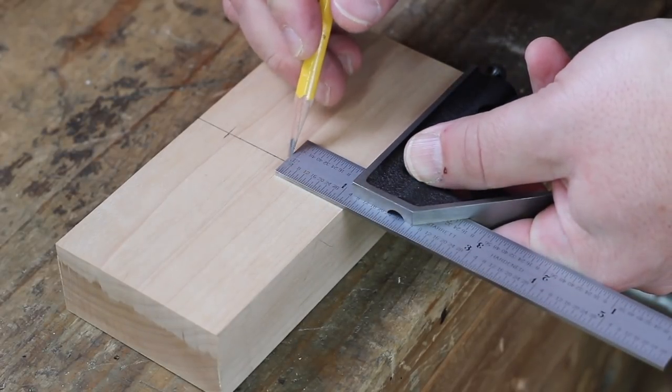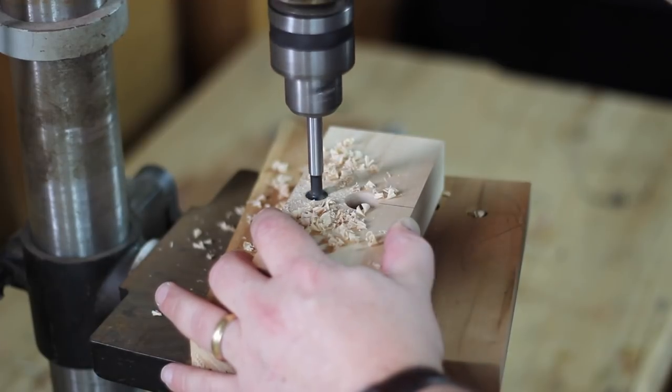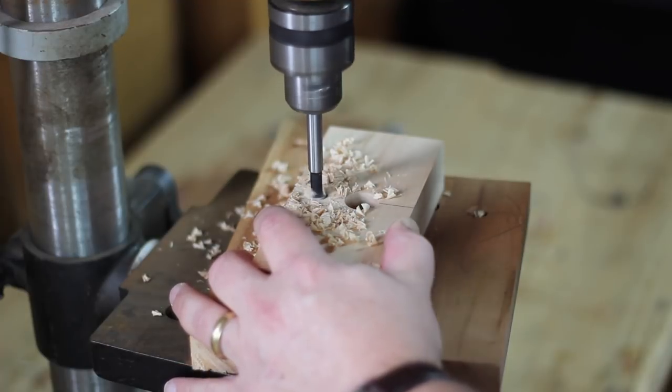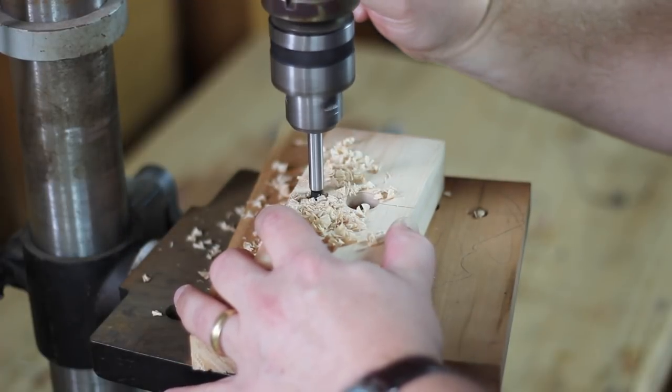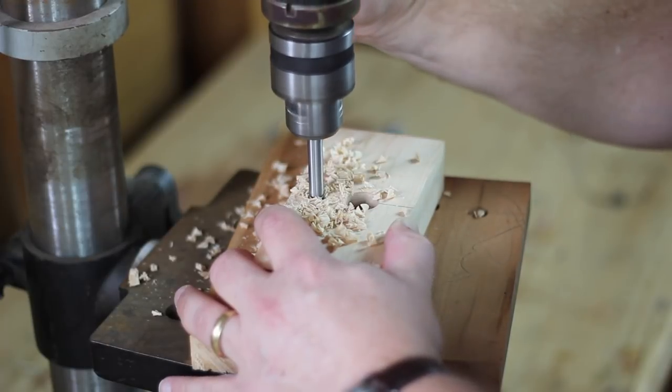With the stock prepared, I marked a location for the first two holes in the fence and then took the fence to the drill press to bore them. The first hole is the start of the mortise for the beam. The second hole is for a brass nut for the thumb screw that will be used to lock the fence in place.